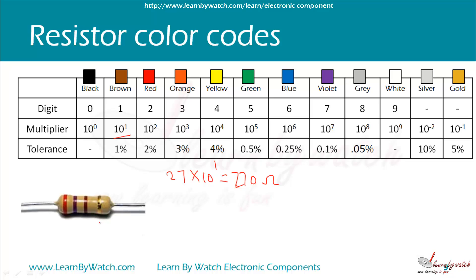Now, the last band is the tolerance band. It represents the error in the resistance of a resistor. It is 5 percent here because this is a gold color, and the value of gold is 5 percent. So the final value of this resistor will be 270 ohm plus or minus 5 percent. 5 percent of 270 ohm is 13.5, so the value of this resistor may lie between 256.5 ohm and 283.5 ohm.